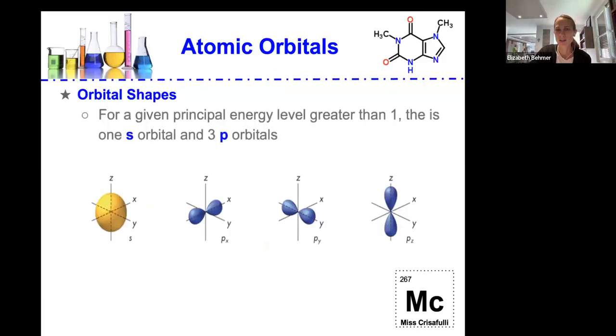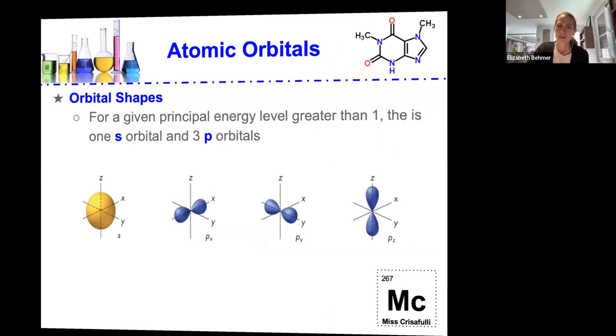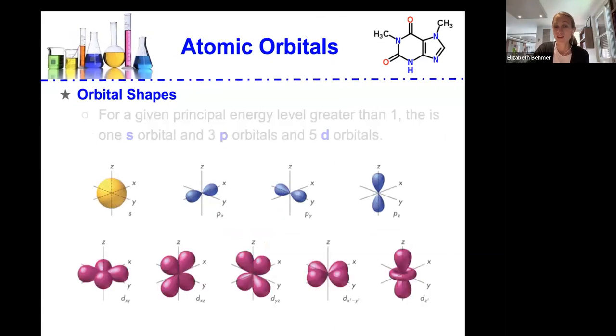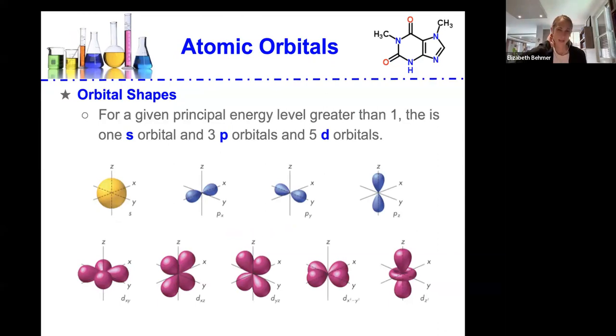The p orbitals are dumbbell shaped as shown by this picture. And for a given principal energy level greater than one, there is one s orbital and three p orbitals.